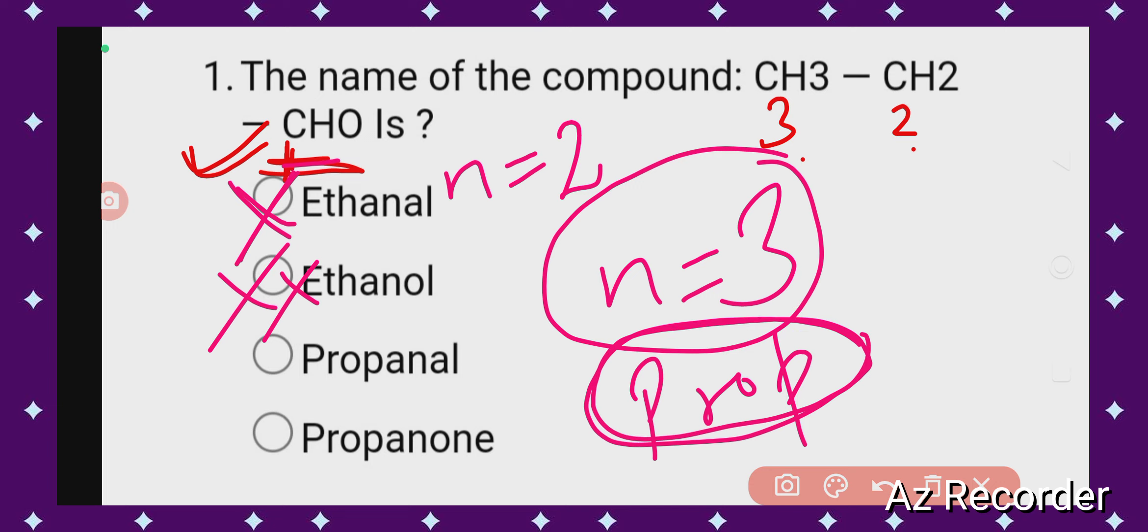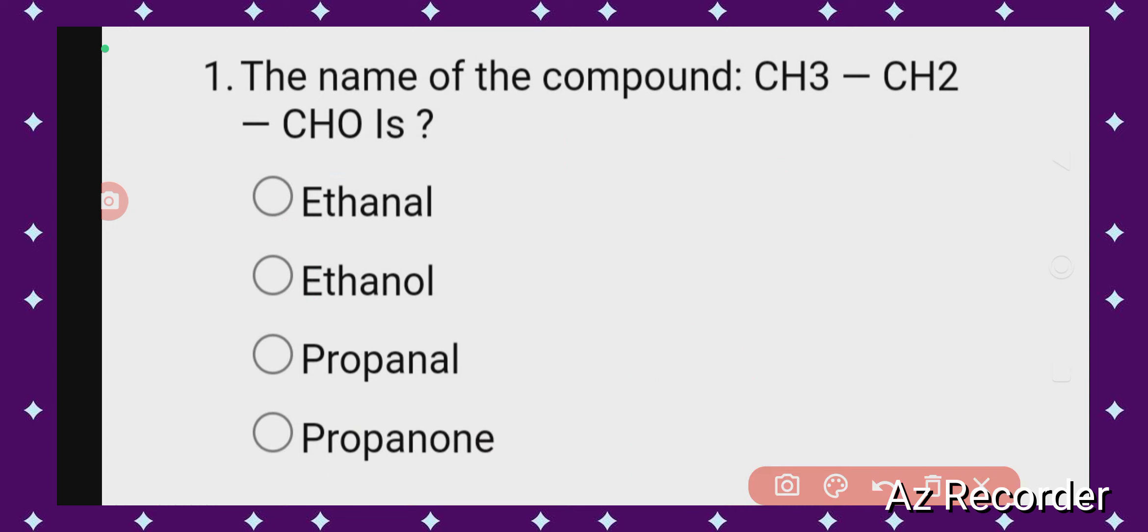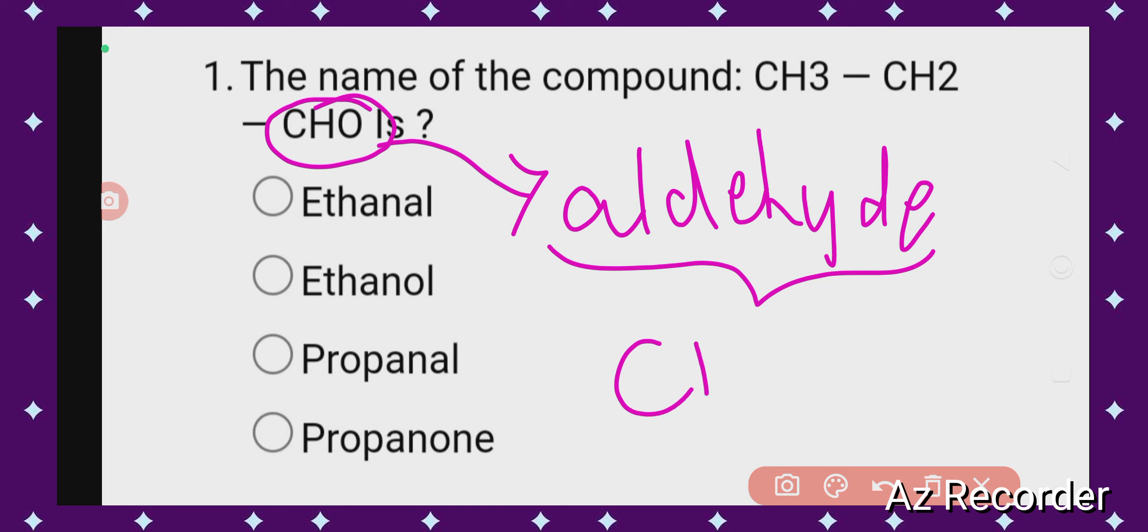Now moving further, this is CHO and if it is CHO, it means it is an aldehyde. For aldehyde we use the suffix 'al'. So your option will be propanal: 'propan' from three carbons (one, two, three) and 'al' from aldehyde.